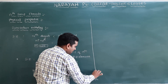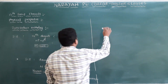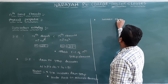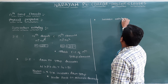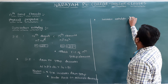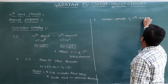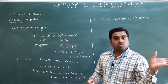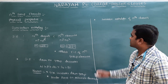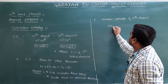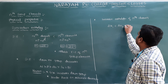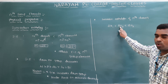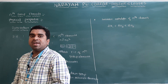For successive ionization enthalpies: ΔH₁ < ΔH₂ < ΔH₃. Removing the first electron requires less energy than removing the second, and removing the third requires the most energy. So successive ionization enthalpies increase because each subsequent electron is harder to remove.